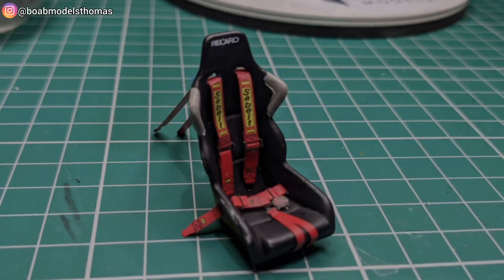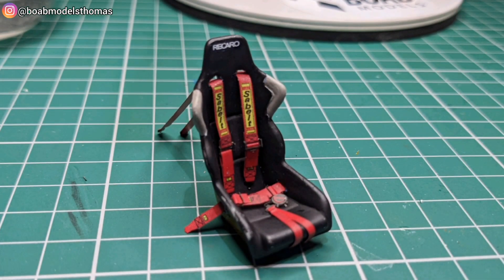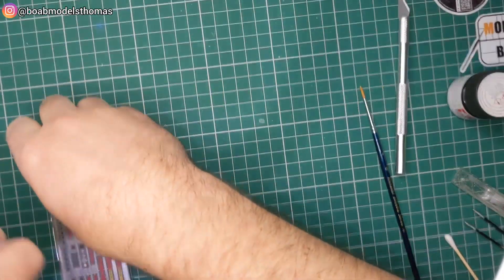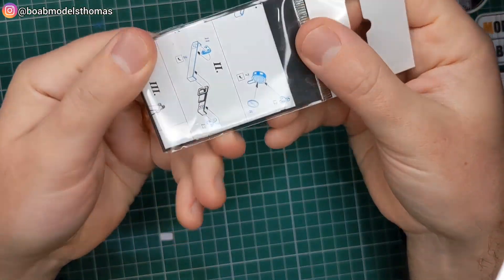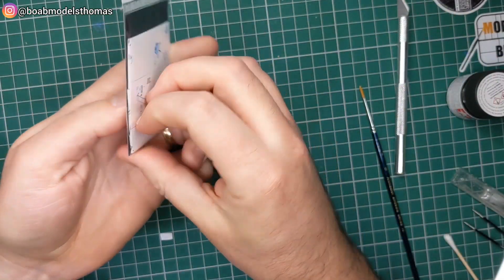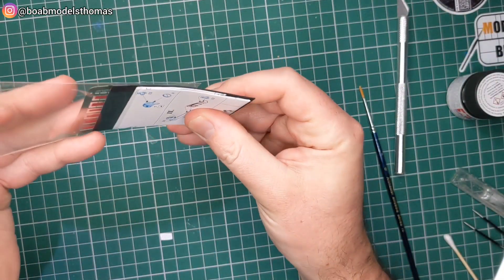So today I'm going to show you how I made these realistic looking Sabelt six-point harnesses. I used this Eduard photo etch set. These are pretty readily available but I'll put a link in the description to where I found them.